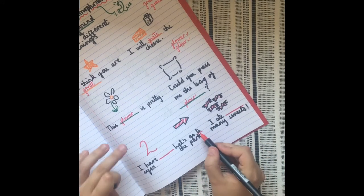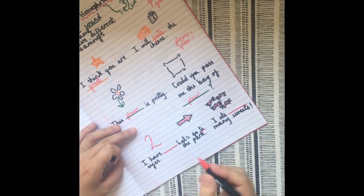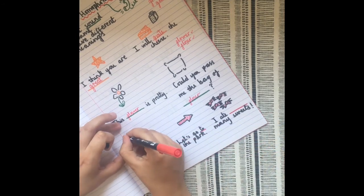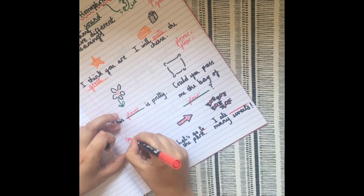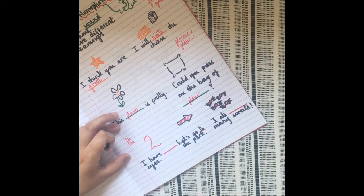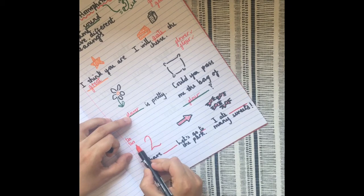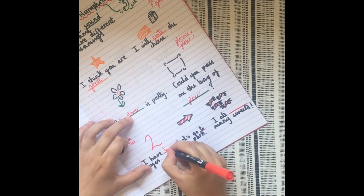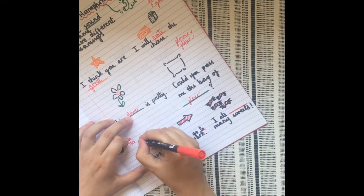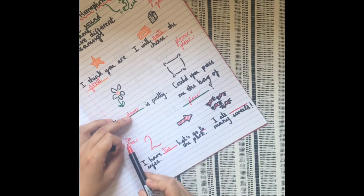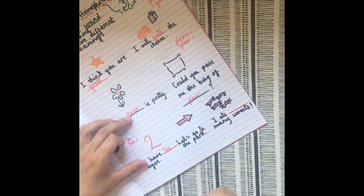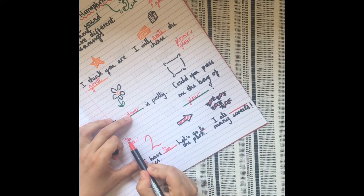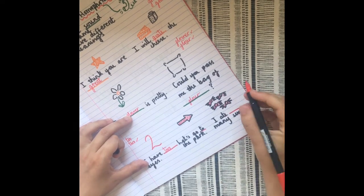Then we also have T-W-O and T-O-O. Okay, 'I have two eyes'—we should know how to spell that one. 'I ate too many sweets.' So I remember this one because it has too many O's in the word.